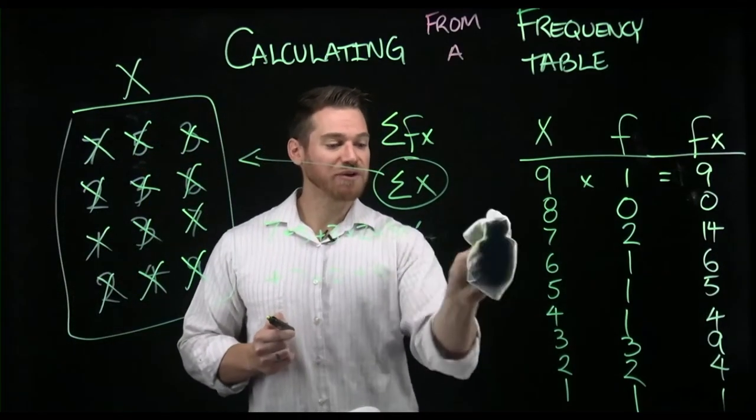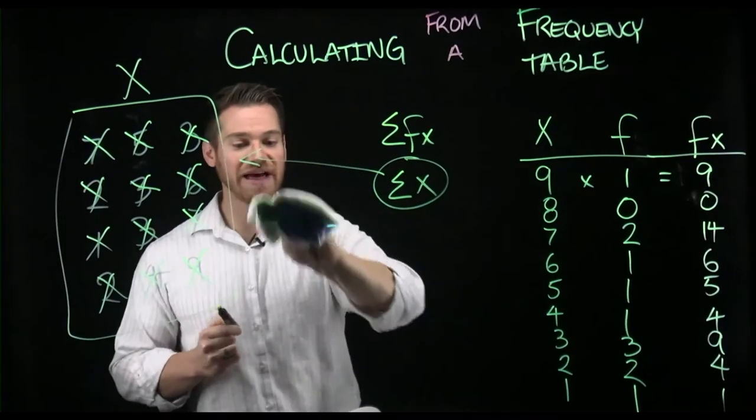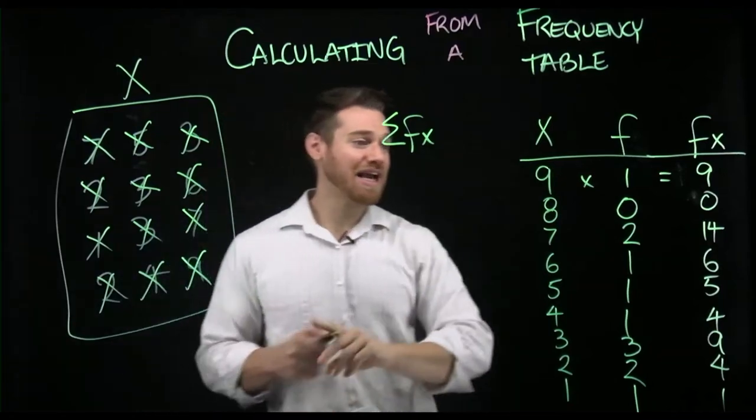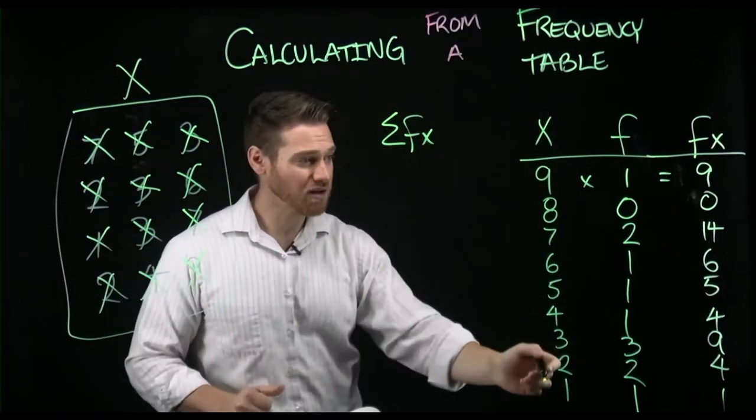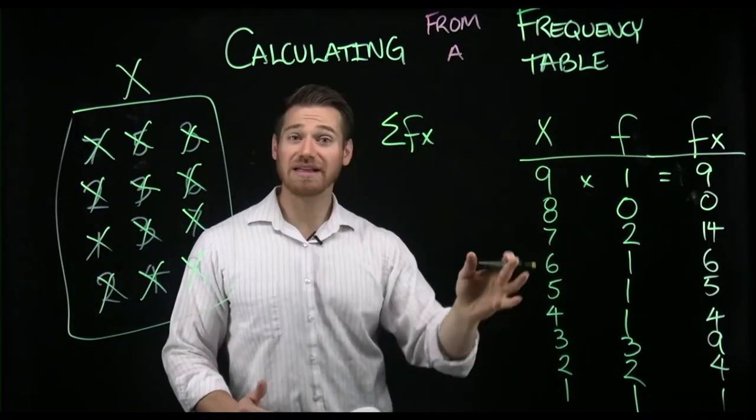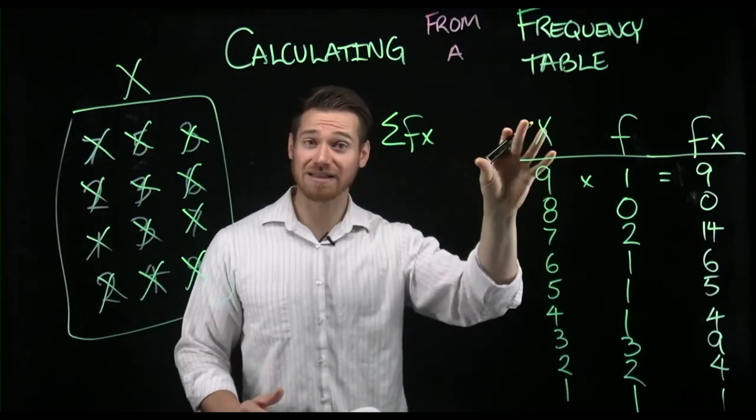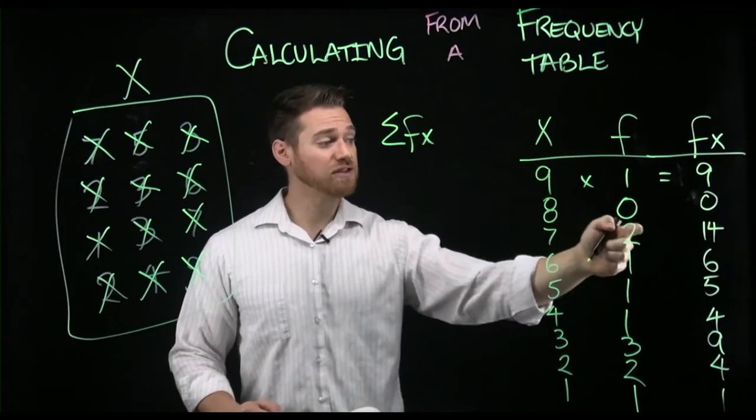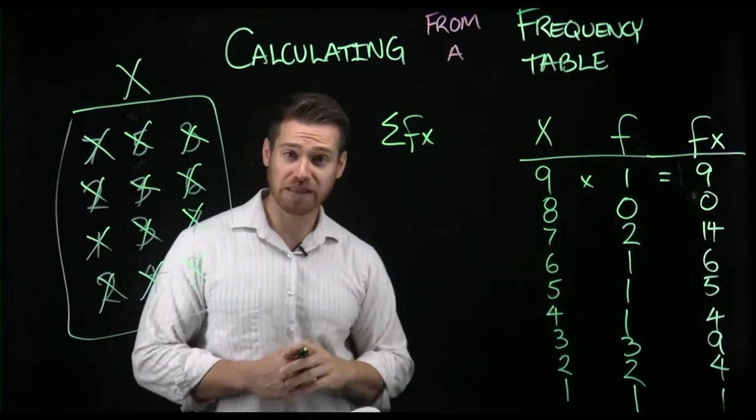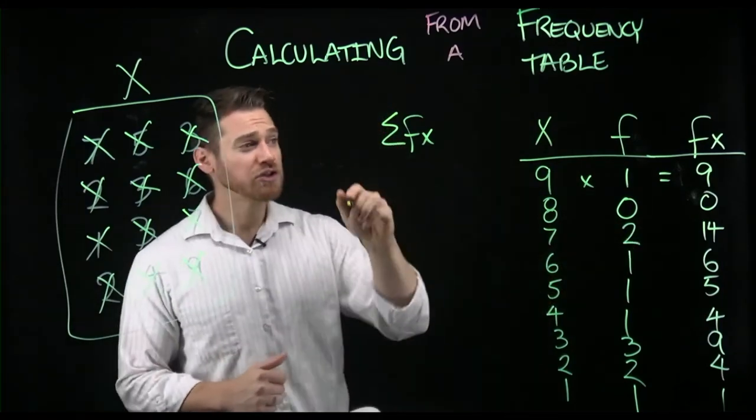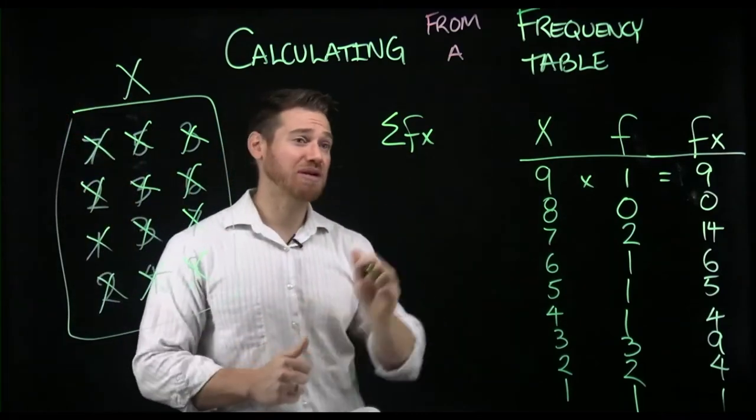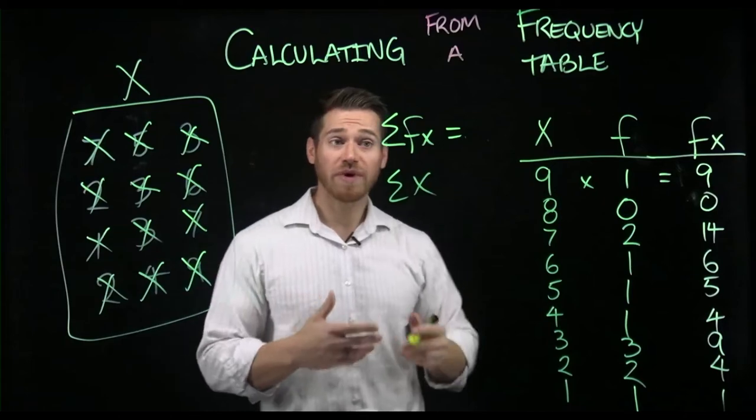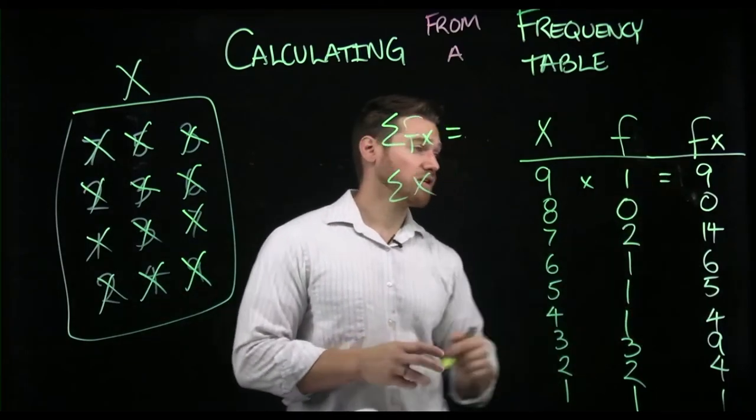But in this case, because we're in a frequency table to get to the sum of x, we cannot simply add the x column because the x column is not the data. It's the possible value that x could take. So for example, we don't just have one 7, we have two 7s, but we have to have both pieces of information to know that. So to get the sum of x, as we would normally consider it, we have to do the sum of fx from our table. So we can quickly get this value by summing this column.